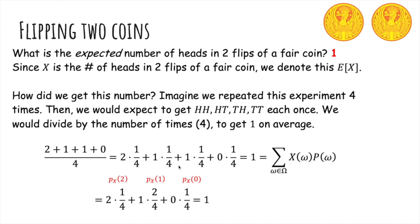Another way we can write this is we could group the ones together. Then we get two times the probability of X equals two, one times the probability of X equals one, and zero times the probability of X equals zero.